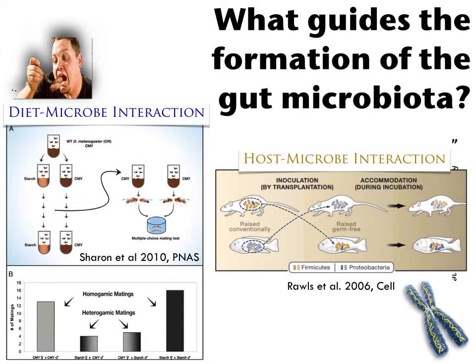Moving microbes between the two types of media could change the mate discrimination. The gut microbiota was shaping mating behavior and preventing one strain of Drosophila melanogaster from mating with another. A pioneering study by John Rawls transplanted microbiota from zebrafish and mice into each other, showing that the mouse host background will retool a zebrafish microbiota to somewhat of a mouse-like microbiota, and vice versa — indicating the host also has a role in structuring the gut microbiota.